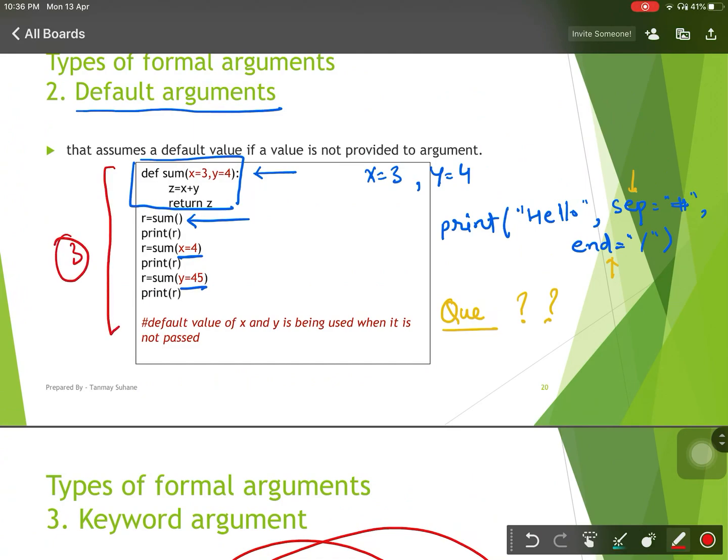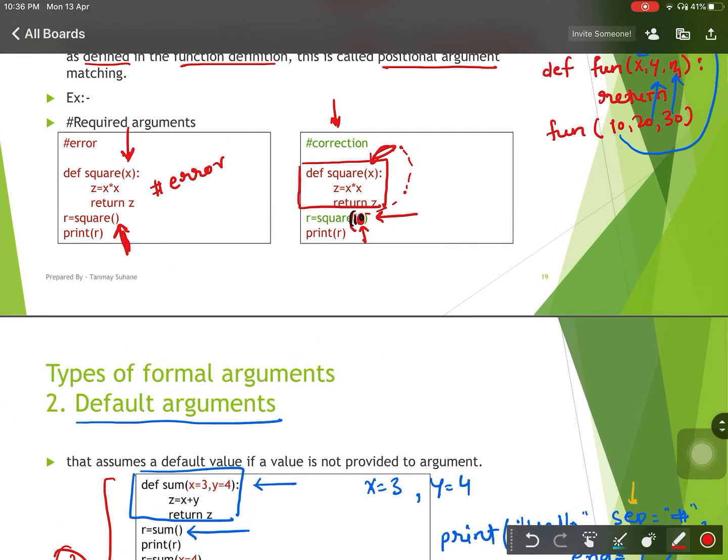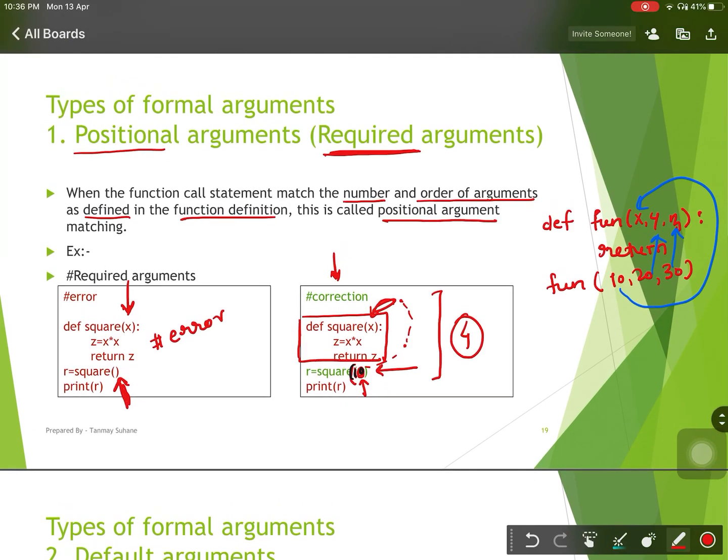What is the output of default argument function here? This is your homework number four. I already have given homework number one to you and you have to find these three outputs and give the answer in Google Classroom.